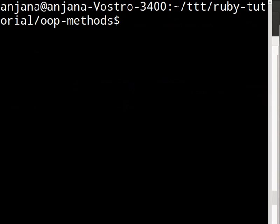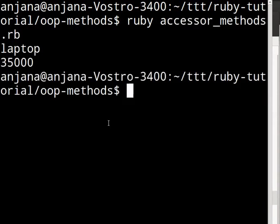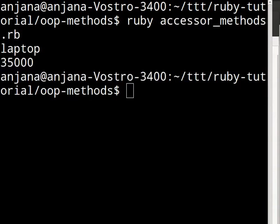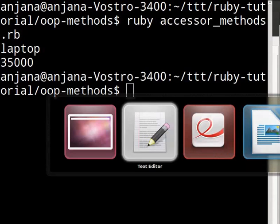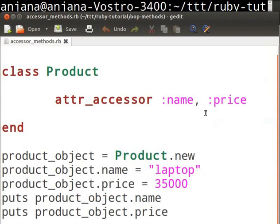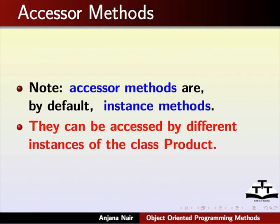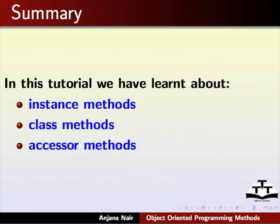Now let us execute the code. You will notice that it prints the values that were set. By now you should be able to write your own accessor methods. One thing to note is that accessor methods are by default instance methods, thus they can be accessed by different instances of the class Product. In this tutorial, we have learnt about instance methods, class methods and accessor methods.